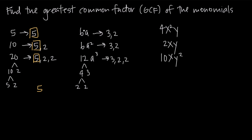Now we need to look at our a variables. We have just a single factor of a — we can't break that down any further. Here we have a squared, which we can break down into a and a. And here we have a cubed, or three factors of a, so we can break that down into a, a, and a.